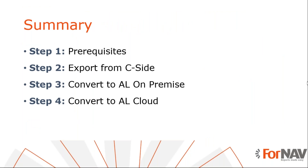Let's recap what we just did. The first step to converting Fornav reports from C/SIDE to an extension is to export the objects — nothing fancy needed, just an export from C/SIDE to a text file. The next step is to determine if you need cloud or on-premise and create an extension to suit — remember to set a target property for on-prem and take a dependency on the Fornav core for cloud. Finally, convert your reports with the Fornav converter.